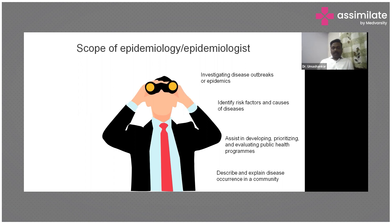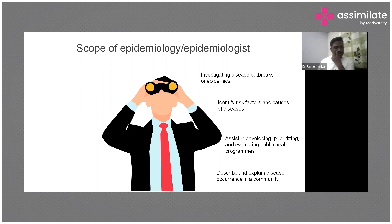Another major role is investigating disease outbreaks or epidemics. It is not that only epidemiologists do this — it is a team effort, but the epidemiologist leads the outbreak investigation. For example, suppose there is an outbreak of food poisoning in a college hostel, with people suddenly having diarrhea and vomiting and being admitted to hospital. A team of experts comes in and tries to find out why the episode occurred, which food was contaminated, and what the contaminant was — whether a virus, bacteria, or something else.